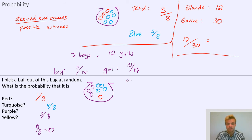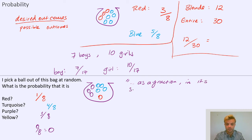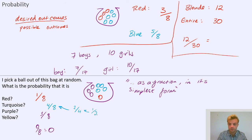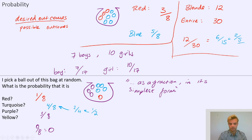Sometimes you'll be told to give your answer as a fraction in its simplest form. Simplifying fractions is a different topic, but it comes up here so we'll talk about it briefly. This four eighths — the probability of picking turquoise — simplifies because they're both even, so I can halve them both to get two over four, and again those are both even, so halve both to get one out of two. The probability is a half. Same with 12 out of 30 for blonde students: divide by two to get six fifteenths, then divide both by three to get two fifths. That would be that fraction in its simplest form.